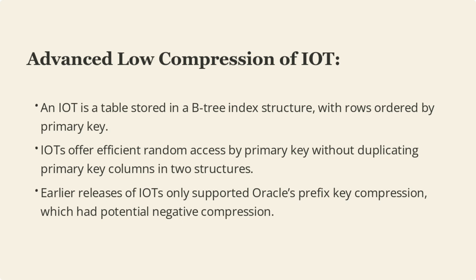An IOT is a table stored in a B-tree index structure with rows ordered by primary key, offering efficient random access by primary key without duplicating primary key columns in two structures. Earlier releases of IOTs only supported Oracle's prefix key compression, which had potential negative compression effects.